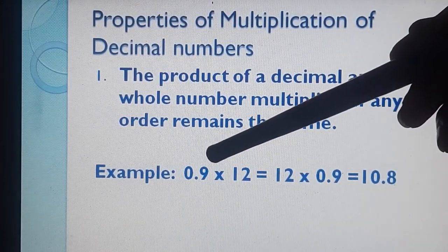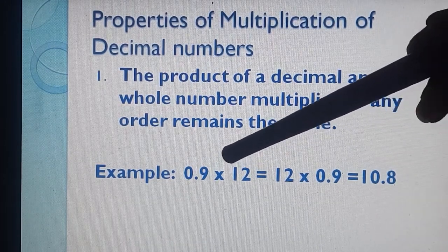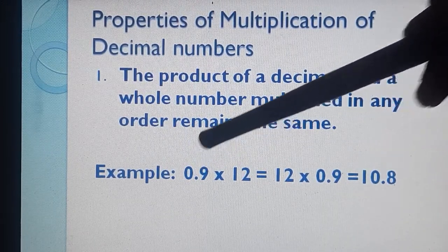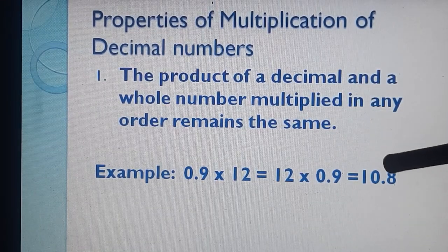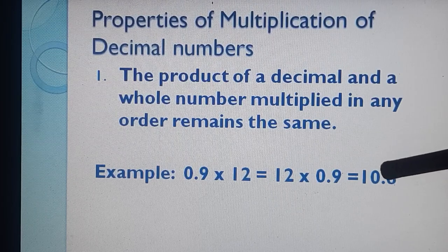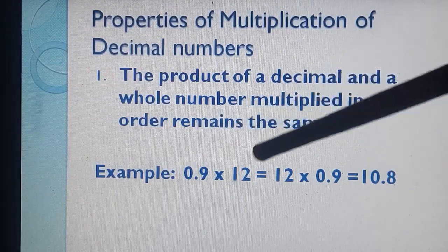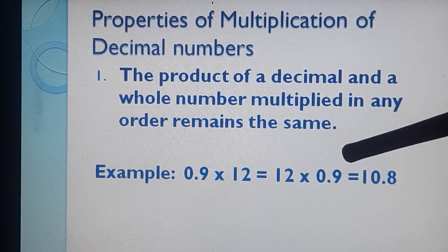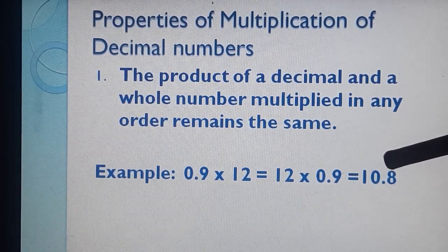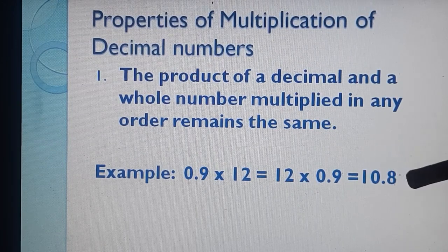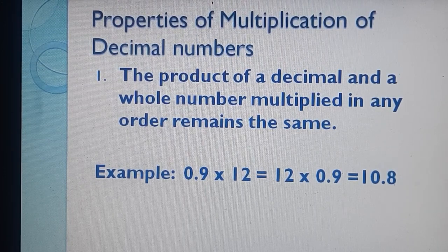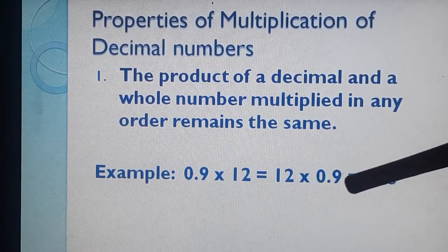See this example: 0.9 multiplied by 12. 12 nines are 108, and after decimal one digit is there. So in our answer also, after decimal we want one digit. We will take the 10ths place and then put the decimal. And if we are changing the order — 0.9 × 12 becomes 12 × 0.9 — 12 nines are 108, after decimal one digit, so the answer is 10.8. When we changed the order, the product is the same.